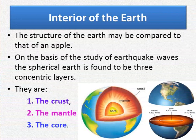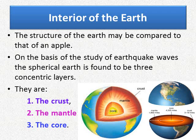The structure of earth may be compared to that of an apple. On the basis of the study of earthquake waves, the spherical earth is found to be made of three concentric layers. Concentric circles are circles of different sizes but having the same center point. There are three concentric layers for the earth. They are the crust (C-R-U-S-T), mantle (M-A-N-T-L-E), and core (C-O-R-E).